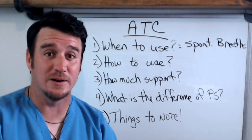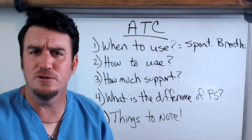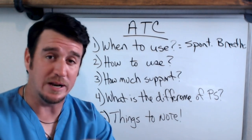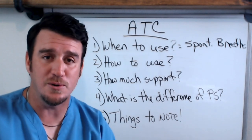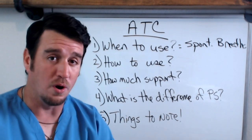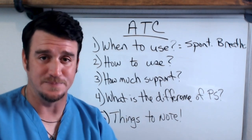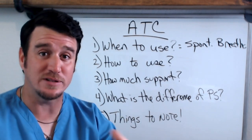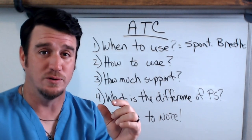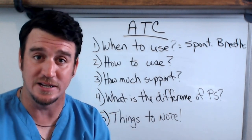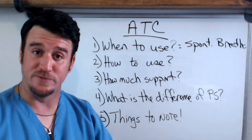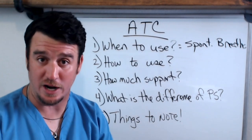The second question is: how do I use it? The first thing you have to do is, within whatever specific ventilator you're using, activate ATC or AAC. You have to tell the vent that this is how I want to assist the patient during spontaneous breathing. So how do you use it? First of all, you have to turn it on.